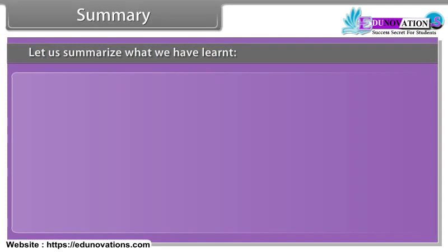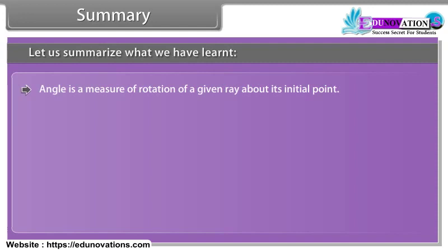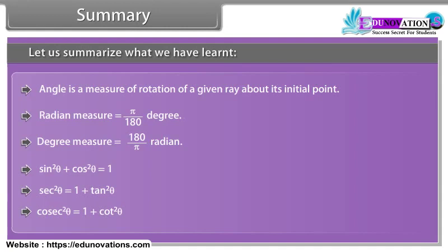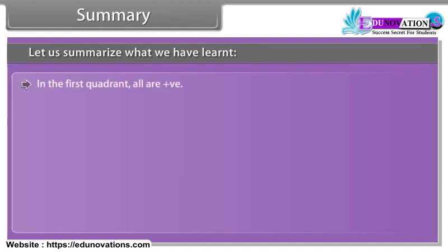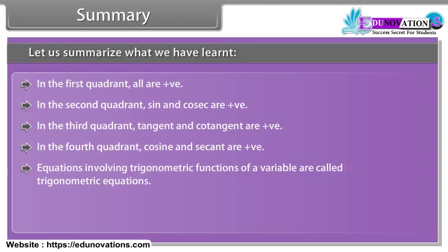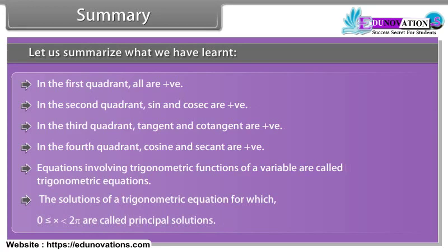Summary: An angle is a measure of rotation of a given ray about its initial point. Radian measure = (π/180) × degree measure; degree measure = (180/π) × radian measure. sin²θ + cos²θ = 1; sec²θ = 1 + tan²θ; cosec²θ = 1 + cot²θ. In quadrant 1 all are positive; in quadrant 2 sine and cosec are positive; in quadrant 3 tangent and cotangent are positive; in quadrant 4 cosine and secant are positive. Equations involving trigonometric functions are called trigonometric equations, and solutions for 0 ≤ x < 2π are called principal solutions.